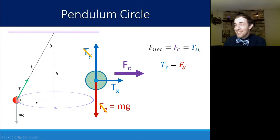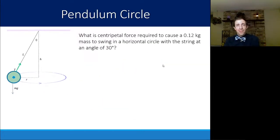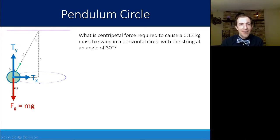Tx is also equal to that centripetal force, which was equal to the net force. Let's look at this as a full example. What is the centripetal force required to cause a 0.12 kilogram mass to swing in a horizontal circle with the string at an angle of 30 degrees? We'll just draw the free body diagram overlaid on top of this. Fg is pointing down, and then I'm just going to split this up right away because I know I'm going to have to.